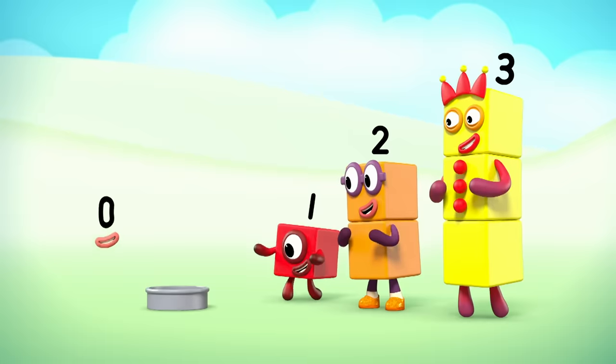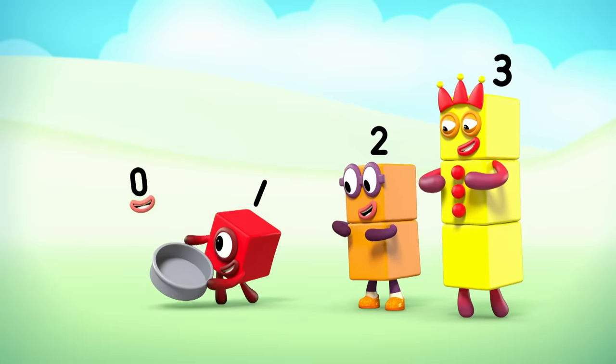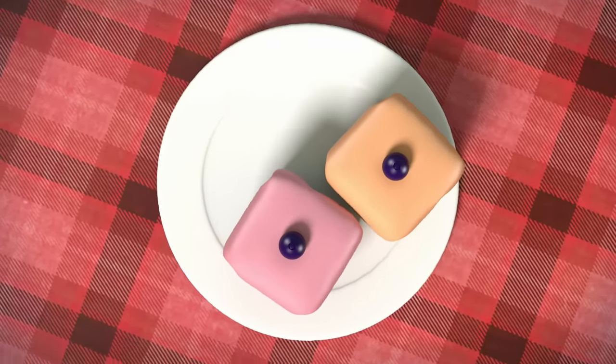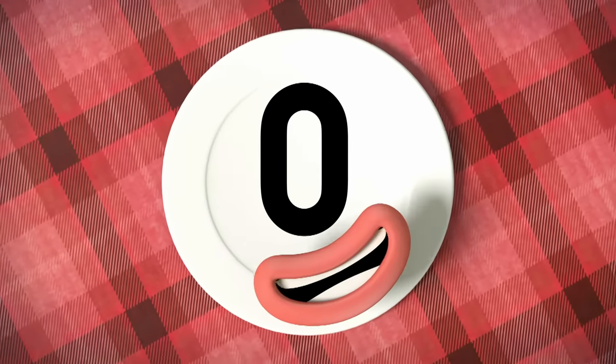I'm the number for nothing, I'm one less than one. When there's nothing of something, I'm the number for none. When there's nothing there to count, none is the amount. You've got zero.